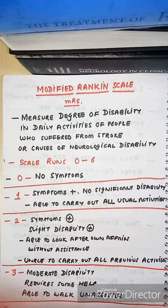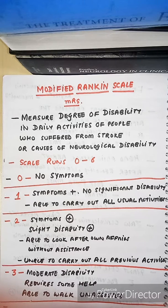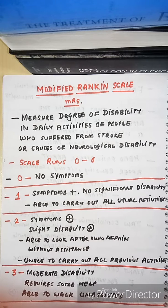Hello friends, welcome to my channel 'Neurology Videos Learned by Zee.' Today we will learn about the Modified Rankine Scale. This scale is also called the MRS scale, which is used to measure the degree of disability in the daily activities of people who suffer from stroke or other causes of neurological disability.